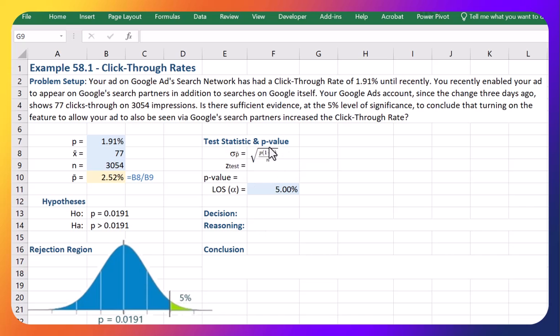So this is the formula for the standard deviation for the sample proportion, or for the standard deviation for the proportion, and that is part of our z-test formula. Again I'm just going to pause the video and write that one out as well.